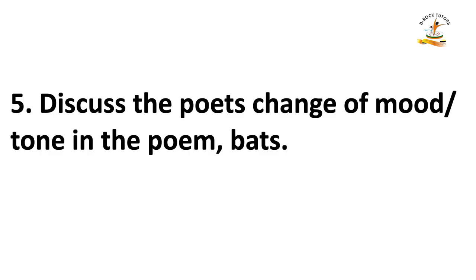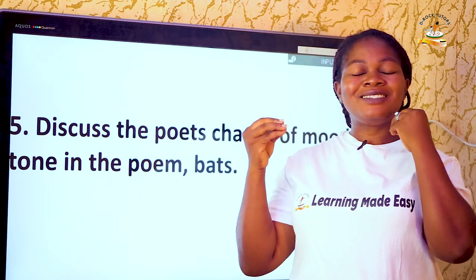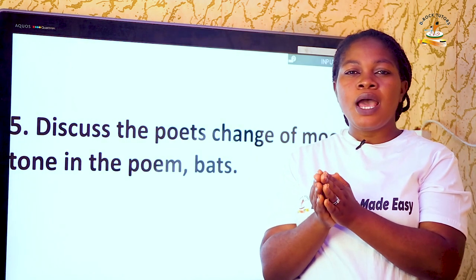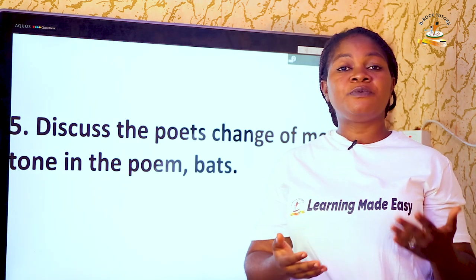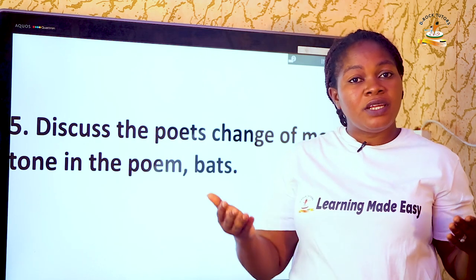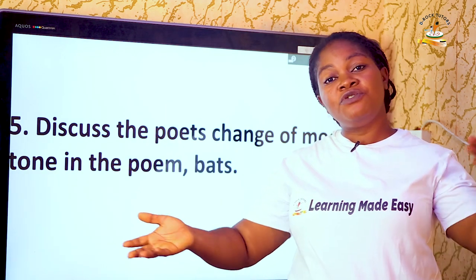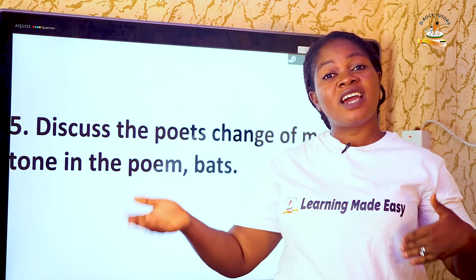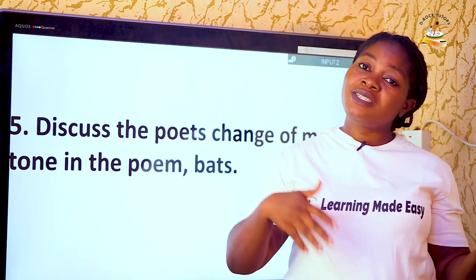Question five: 'Discuss the cause of the poet's change of mood or tone in the poem Bats.' DH Lawrence started the poem as if conversing with someone, telling them how he spent his evening. He started by sitting outside after dinner to enjoy himself while his food digested before going to bed.